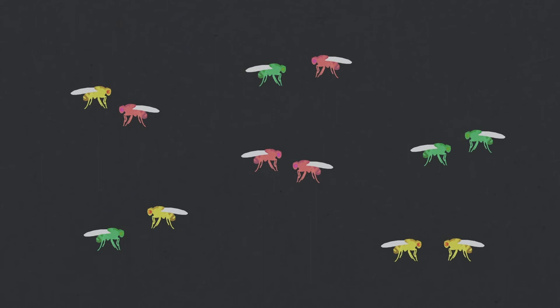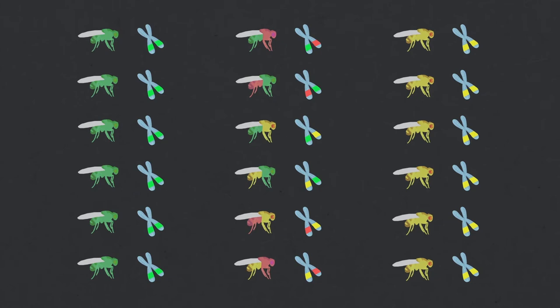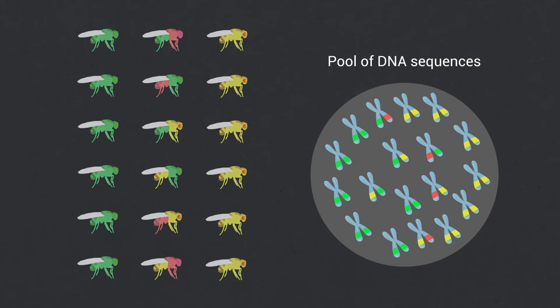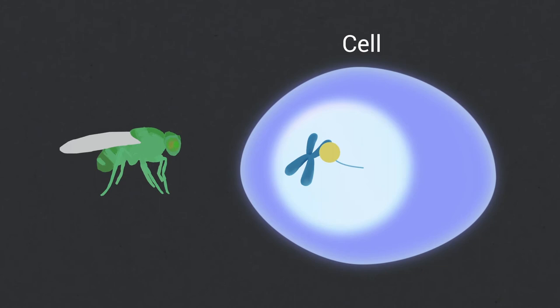The modern evolutionary synthesis postulates that evolution acts mainly via natural selection, operating on phenotypes, ultimately affecting the genetic diversity of populations and species. This diversity is proposed to be incarnated in the pool of DNA sequences of its individuals. In this DNA-centric vision of life and inheritance, DNA specifies organismal traits by driving synthesis of proteins and conveys information to future generations.